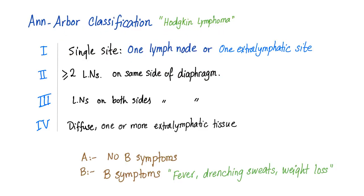The Ann Arbor classification is used for Hodgkin's lymphoma staging. Stage 1 is a single site — one lymph node or one extra-lymphatic site. Stage 2 is two or more lymph nodes on the same side of the diaphragm. Stage 3 is lymph nodes on both sides of the diaphragm. Stage 4 is diffuse involvement of one or more extra-lymphatic tissues, such as liver involvement or bone marrow involvement.